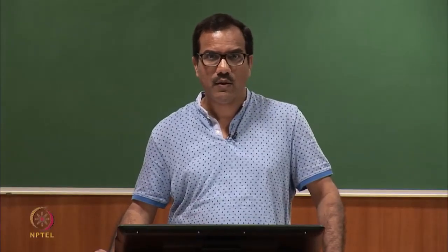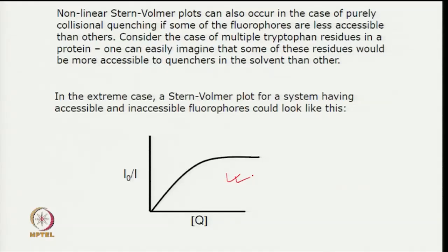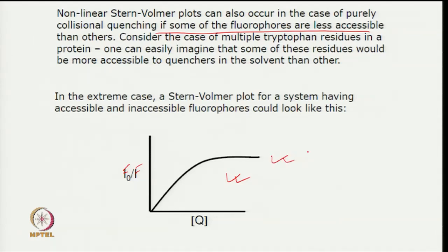Sometimes you can also get a downward curvature when you plot F₀/F versus concentration of Q. This can happen if some of the fluorophores are less accessible than others. For example, if you take a protein molecule it will have multiple tryptophan residues and it is possible that some residues are more accessible to quenchers than others, in which case your Stern-Volmer plot will show this downward curvature.